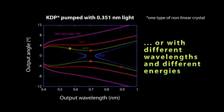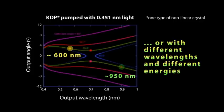Or you could have a pair with more energy and shorter wavelength here. This is around 600. And its twin with the remaining energy is around 950 nanometers. And they would come out at maybe 3 degrees and 5 degrees.